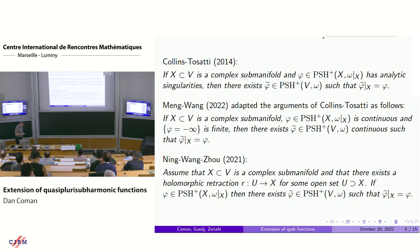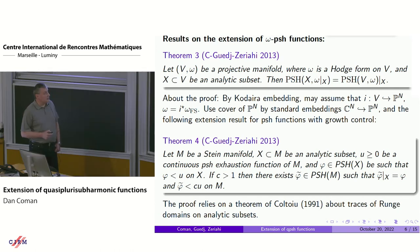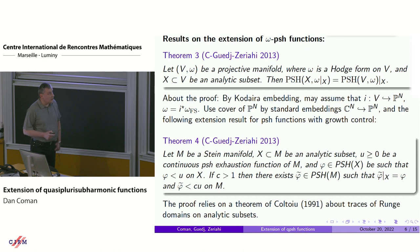What we were doing with Gage and Zeryahi was to consider the problem of extension of just omega-plurisubharmonic functions — no extra positivity. In the case when there is no extra positivity, we have a result from 2013 referring to special Kähler forms. Omega is supposed to be a Hodge form — integral class — or in other words, omega is in the Chern class of an ample line bundle on V. Then X can be with singularities as well. So if you have just an analytic subset and this special Kähler form, then the extension is always possible without extra positivity: any omega-plurisubharmonic function on X always extends to an omega-plurisubharmonic function on V.